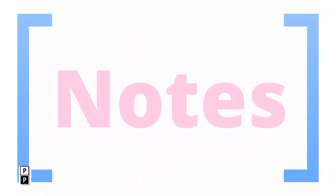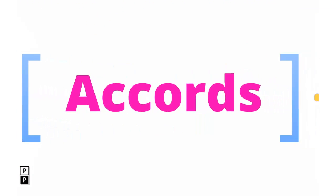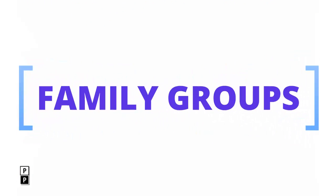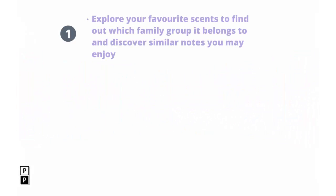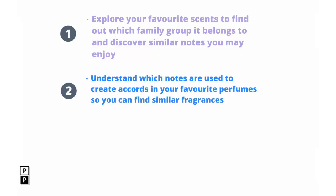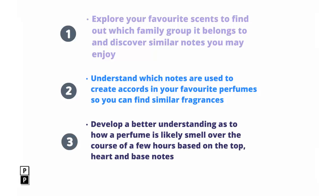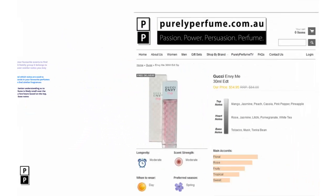Now that we understand the concept of notes, accords, and family groups, you can use this information to: 1. Explore your favourite scents to find out which family group they belong to and discover similar notes you may enjoy. 2. Understand which notes are used to create accords in your favourite perfume so you can find similar fragrances. 3. Develop a better understanding as to how a perfume is likely to smell over the course of a few hours based on the top, heart, and base notes.